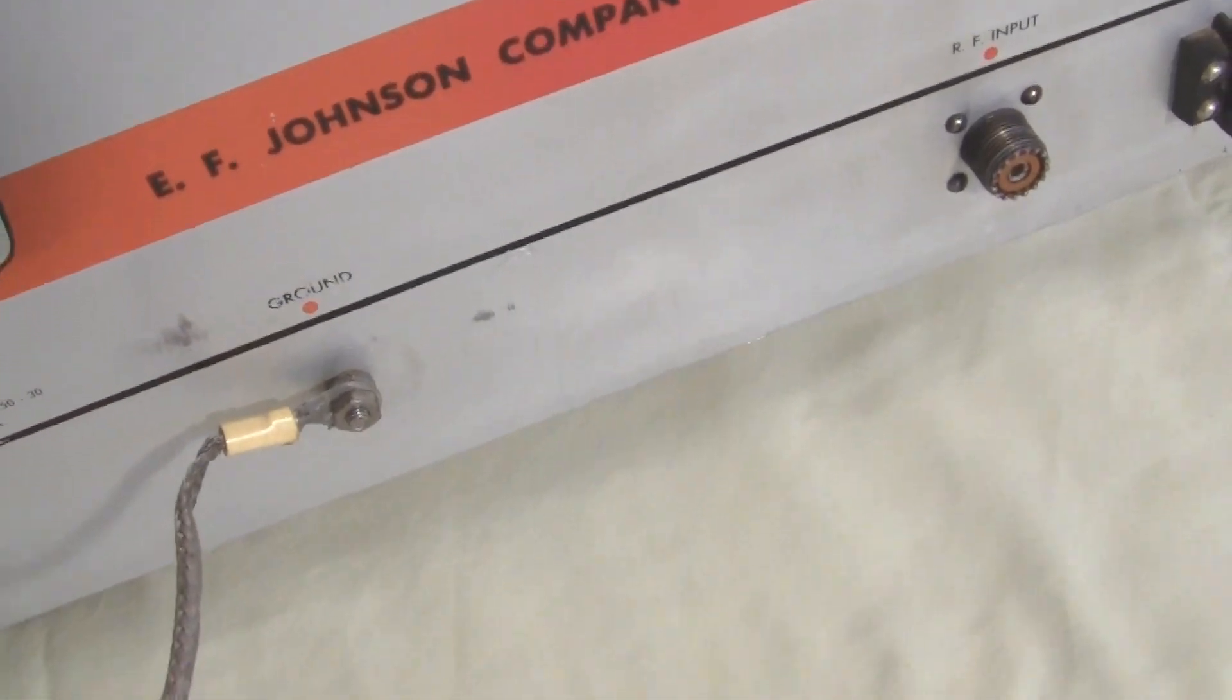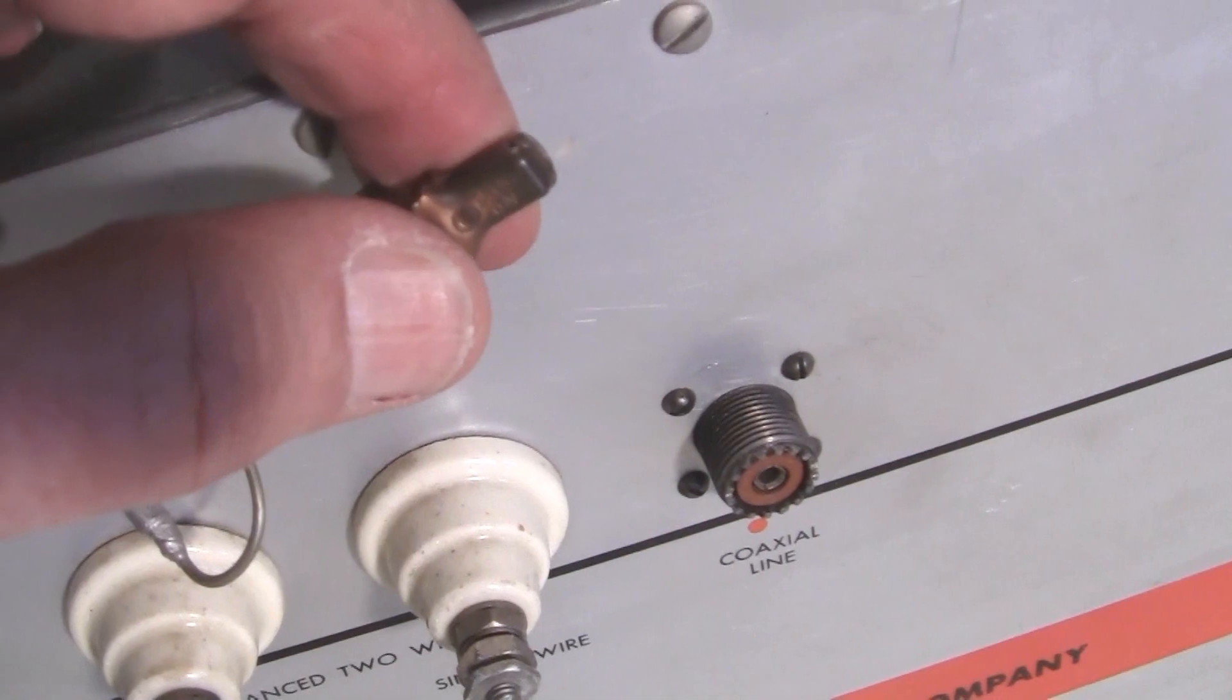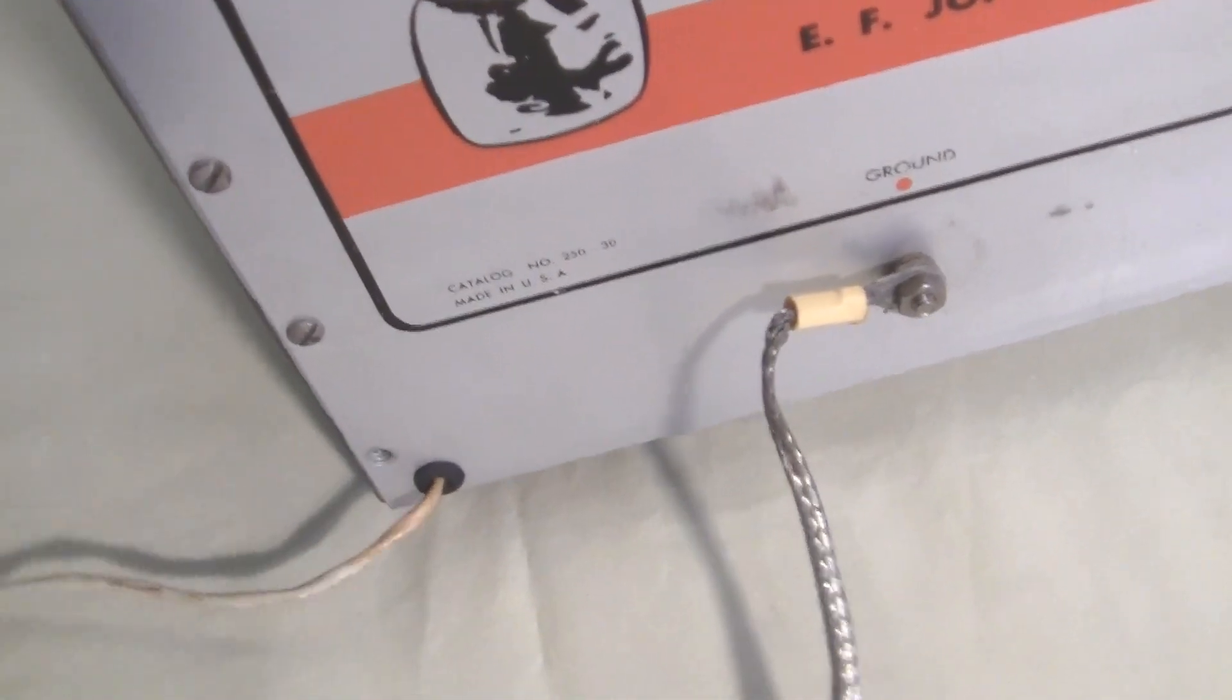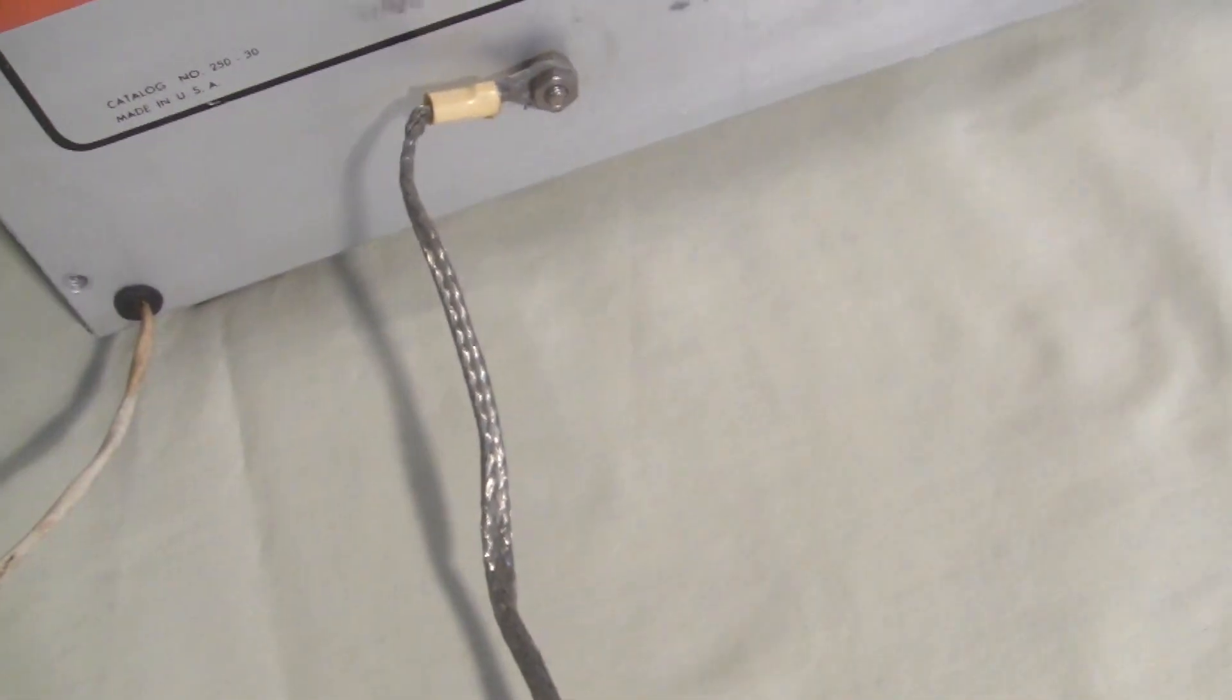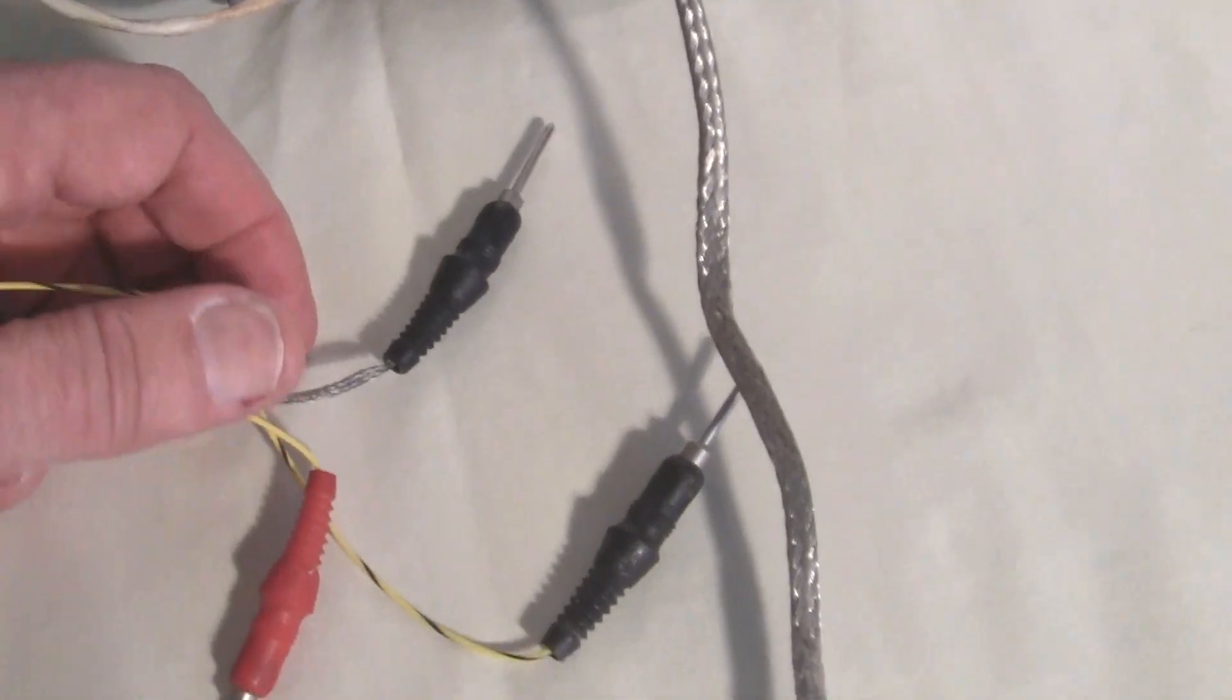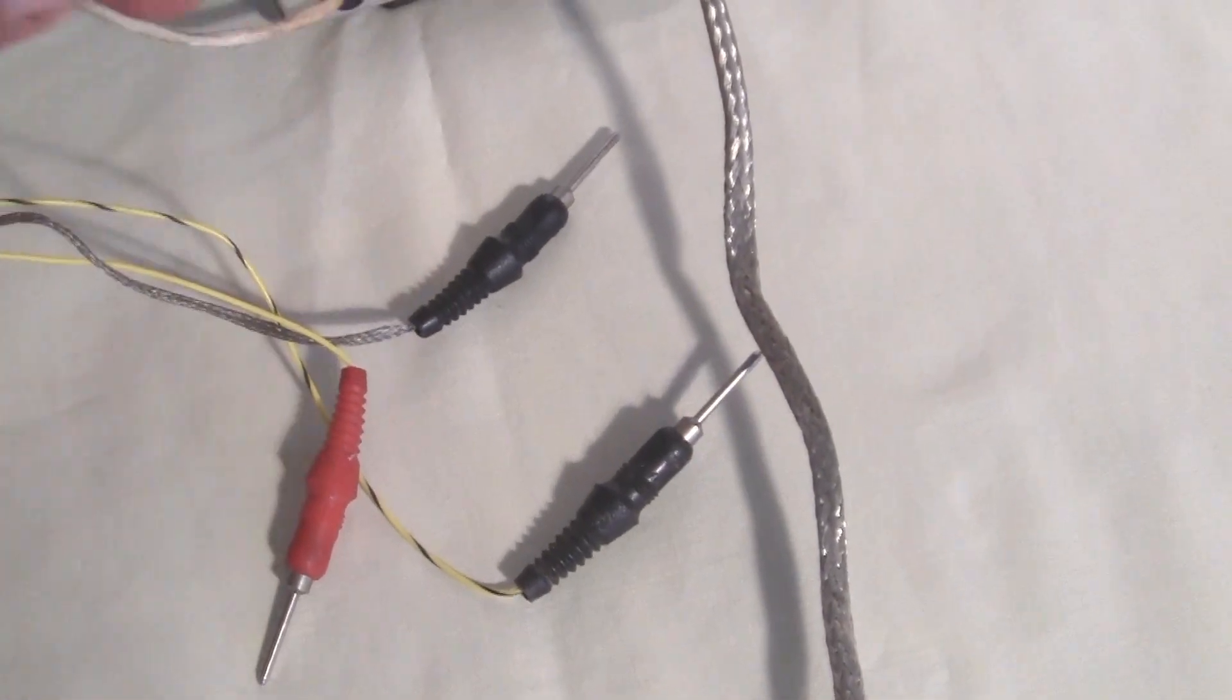This is just another ground connection down here. This is just a ground connection, as is this connector up here. But this wire here, if we bring it up, is the one that plugs into the three connections that plug into the Johnson directional coupler.